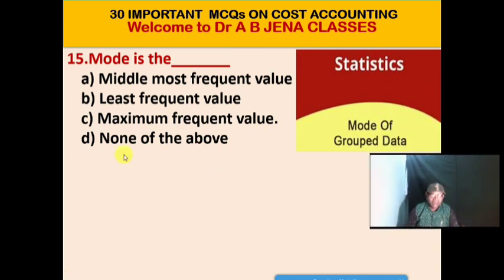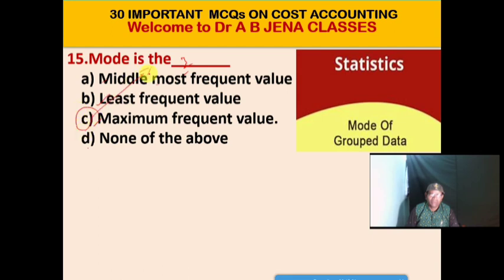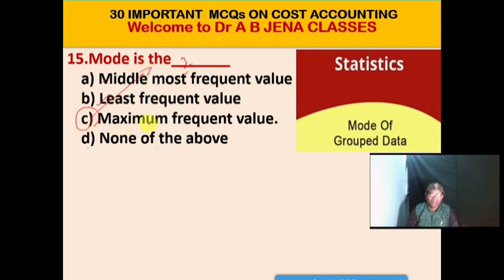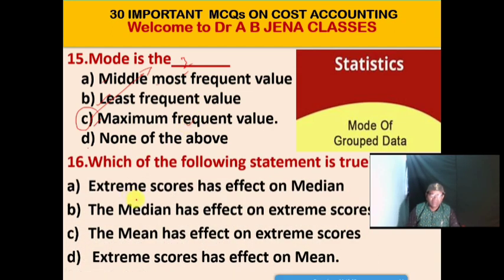Next MCQ: Mode is what? A. The middle most frequent value. B. The least frequent value. C. The maximum frequent value. D. None of the above. C is the right option. Mode is the maximum frequent value.